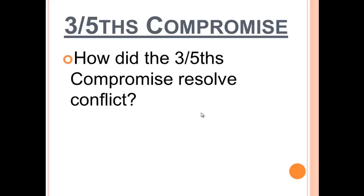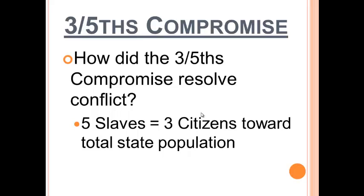We have something called the Three-Fifths Compromise. What they agreed on is that for every five slaves, three of them would count as citizens towards the total state population. So if you have 100 slaves, 60 of them would count towards citizens for population. Virginia, a state that had lots of slaves, would get extra citizens to count towards representation. Representation is so important because the House of Representatives, which helps create laws, is based off population. That population was determined by something called a census, which was taken every 10 years — every year that ends in a zero. Please write down: census, C-E-N-S-U-S. It's very important to fill out your census form every 10 years because it helps make sure you have a voice within government.